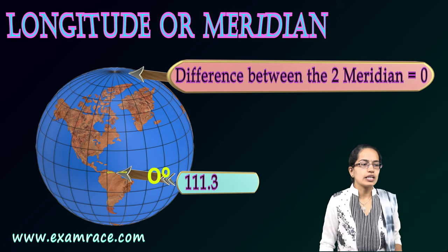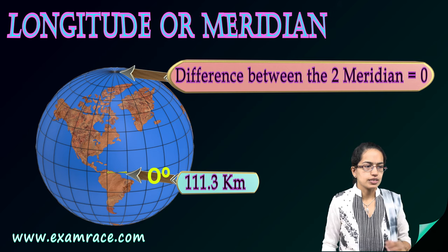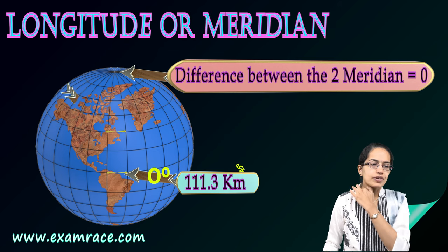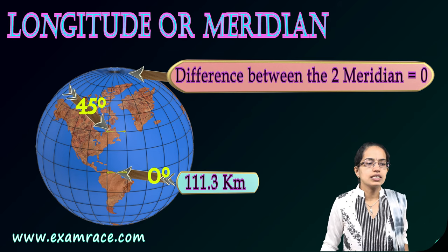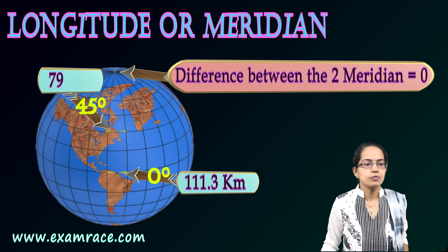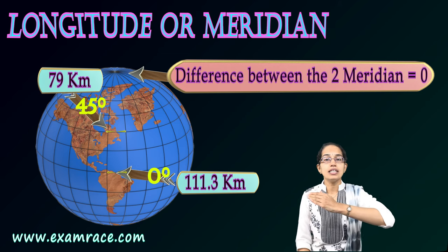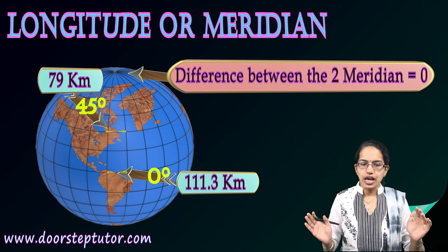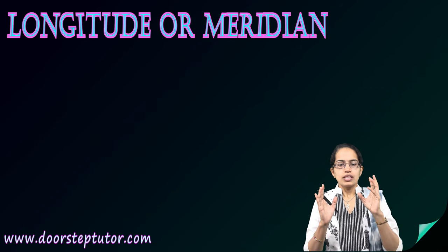The distance at the equator is around 111.3 kilometers. At nearly 45 degrees, the distance is nearly 79 kilometers, drastically reducing further north. And that's how we have the meridians.